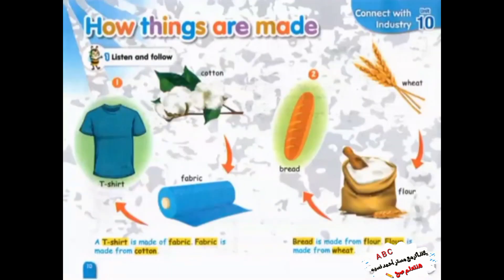Unit 10, Page 10. Exercise 1. Listen and follow. 1. A T-shirt is made of fabric. Fabric is made from cotton. 2. Bread is made from flour. Flour is made from wheat.